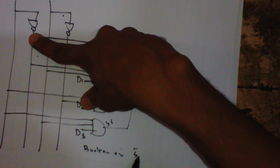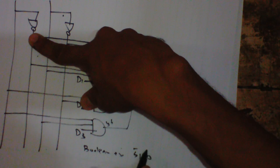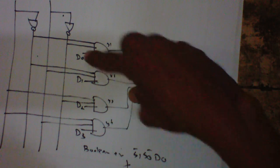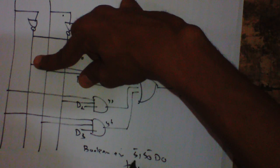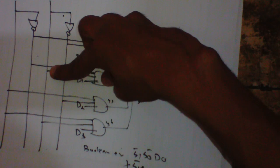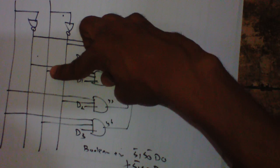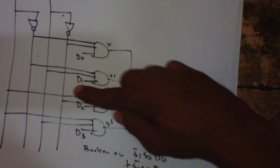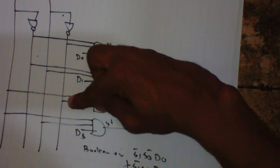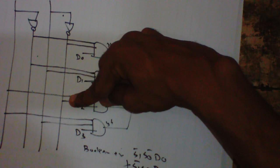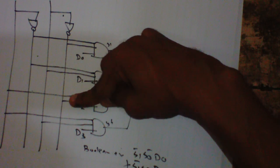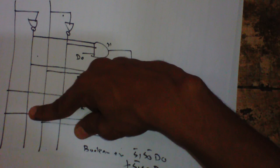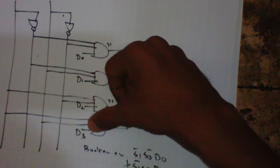S1 bar into S0 bar into D0 plus S1 bar into S0 into D1 plus S1 into S0 bar into D2 plus S1 into S0 into D3.